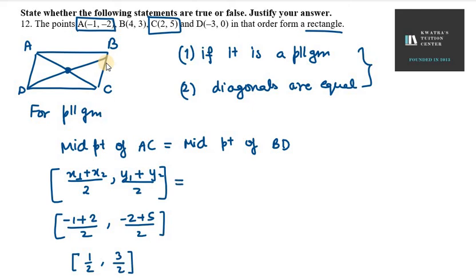Ab deekhte hain from the other side, BD ki taraf se check parte hain ki humara answer kya same aa raha ya nahi. So B and D, B in this case is 4 comma 3 and D in this case is -3 comma 0. So x1 is 4, x2 is -3 over 2 and you have y1 as 3 and y2 as 0 over 2. So you get 1/2 and you get 3 over 2.